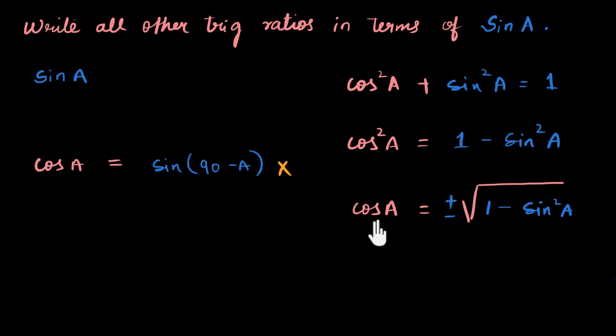In class 10, cos A is basically, if you have a right angle triangle, if this angle is A, then cos A is basically this length by this length, right? And this length is a positive number, this length is a positive number, so this length by this length will also be a positive number.